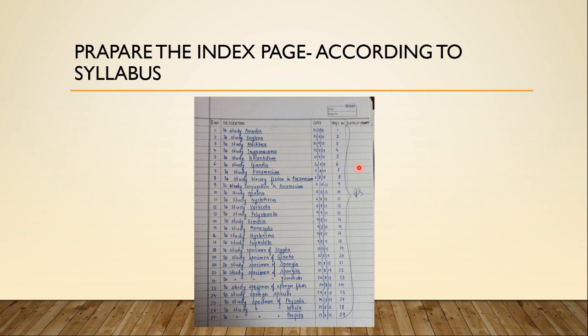In the index page, you should have the serial number and the description of what you have done — whether it is identification, an experiment, or observation of any system. Another column should be designated for dates, the next column for the page number, and then you should have a column for the teacher's comments or teacher's signature.